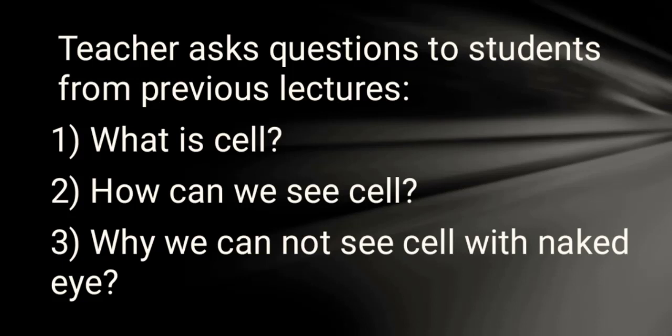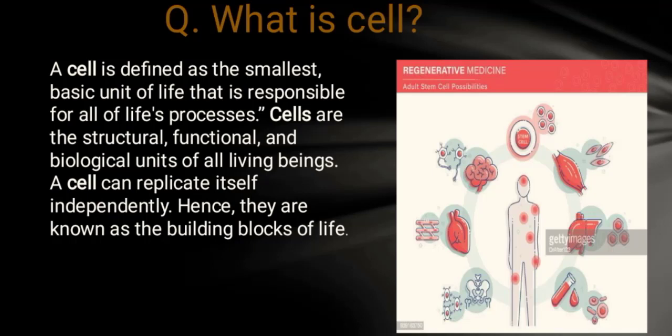How can we see the cell? Why we cannot see the cell with the naked eye? What is a cell? A cell is defined as the smallest basic unit of life that is responsible for all life processes. It is the structural, functional, and biological unit of living beings.